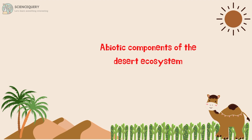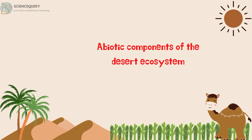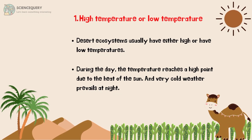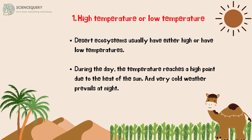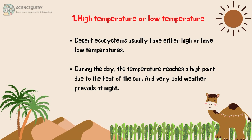Now let's see what are the abiotic components of the desert ecosystem. The first abiotic component is high temperature or low temperature. Desert ecosystems usually have either high or low temperatures. During the day, the temperature reaches a high point due to the heat of the sun, and very cold weather prevails at night.